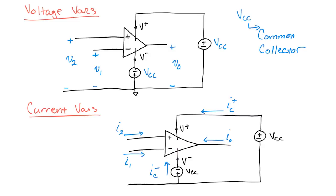In reality, these currents won't necessarily all flow in this assumed direction. For example, the output current will likely flow out of the op amp depending on the input signal direction. If you have a sinusoidal input, the current might flip back and forth. But don't confuse this with AC — think of it as DC operation for now. We assume everything flows in so we can write simple Kirchhoff's current law equations. Some will come out negative, meaning they flow the opposite way — just like in mesh current analysis, where a negative answer tells you the current is reversed.